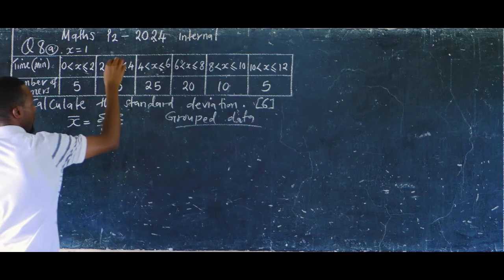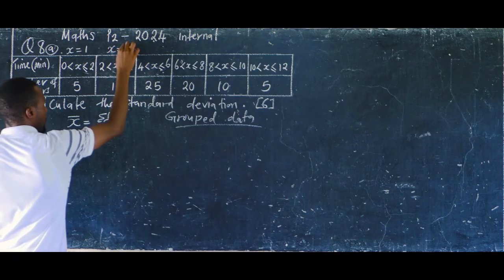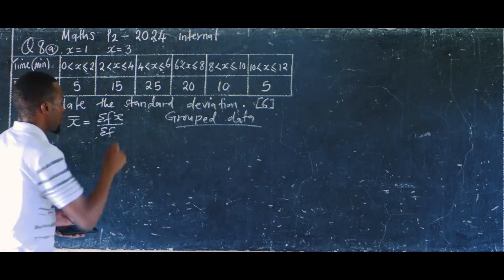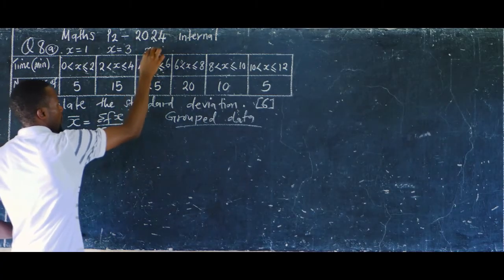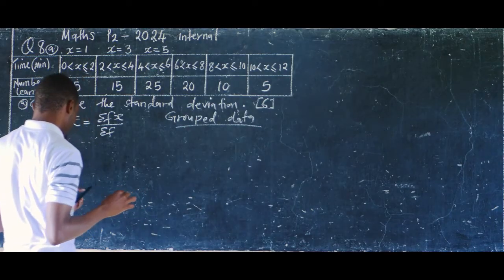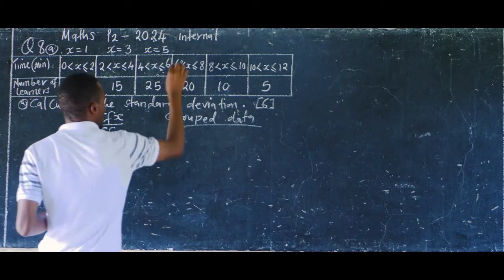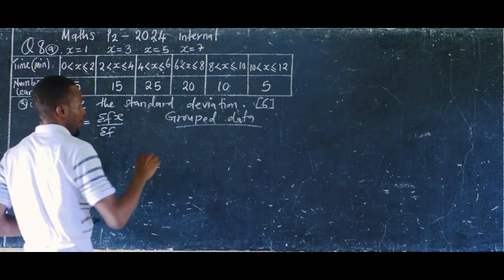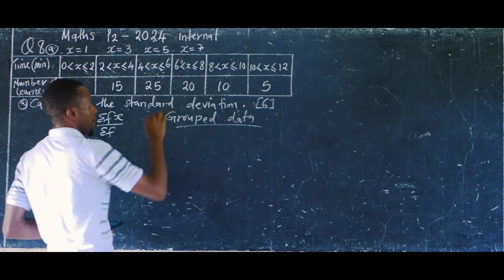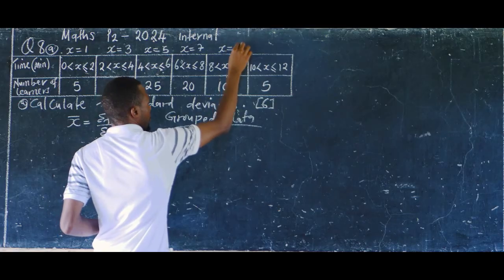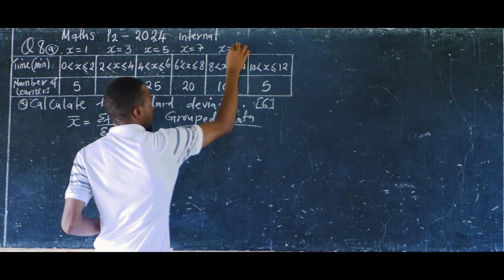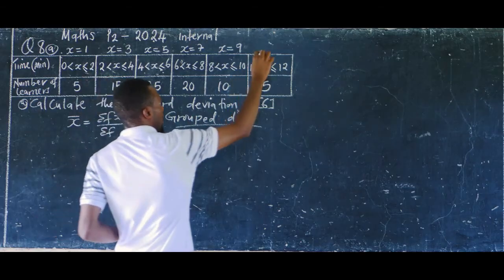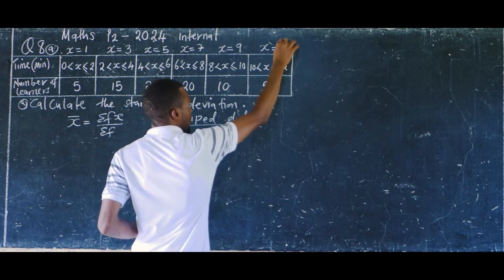Continuing the midpoints: four plus six is ten, divided by two gives x equals five. Then six plus eight is fourteen, divided by two gives x equals seven. Eight plus ten is eighteen, divided by two gives x equals nine. Then ten plus twelve is twenty-two, divided by two gives x equals eleven.